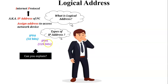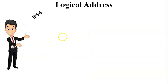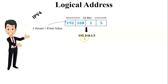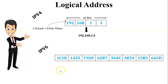IPv4 is a 32-bit address and IPv6 is a 128-bit address. Let us see an example of IPv4. The decimal value is 192.168.1.5. It is 32 bits because when this decimal value is converted to binary, each number stores 8 bits — one octet equals 8 bits. There are four octets, so 8 times 4 equals 32 bits. The IPv4 address is written as a dotted decimal number like 192.168.1.5.